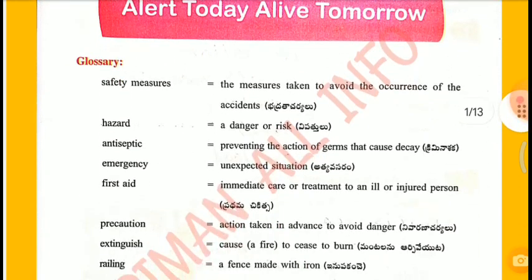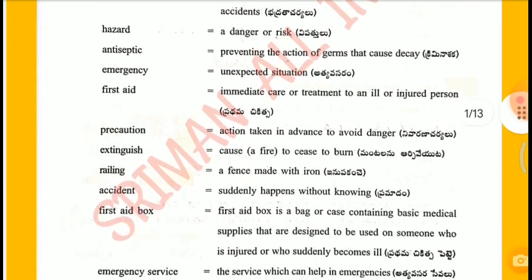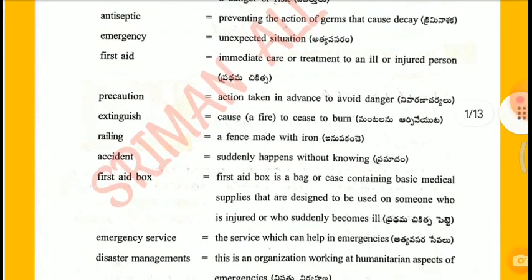Safety Measures: The measures taken to avoid the occurrence of accidents. Hazard: A danger or risk. Antiseptic: Preventing the action of germs that cause decay. Emergency: Unexpected situation. First Aid: Immediate care or treatment to an ill or injured person. Precaution: Action taken in advance to avoid danger.